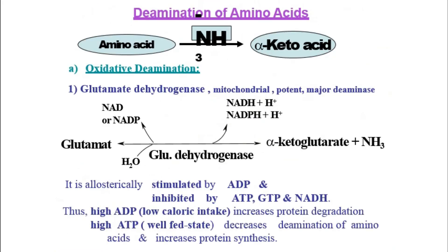In the process of deamination, the amino group of the amino acid is removed, and the amino acid gets converted into an alpha-keto acid. For oxidative deamination, the enzyme glutamate dehydrogenase, found in the mitochondria, acts as the major deaminase. It converts glutamate into alpha-ketoglutarate and ammonia.